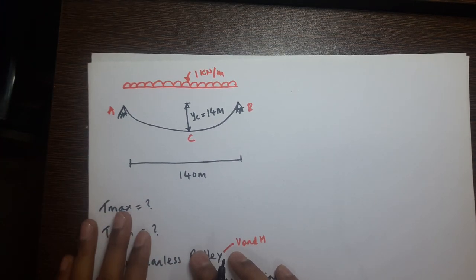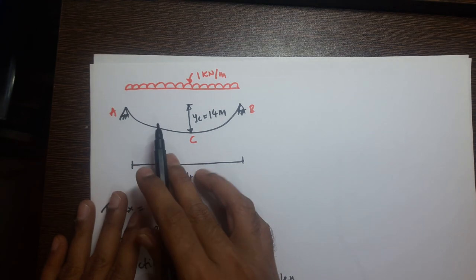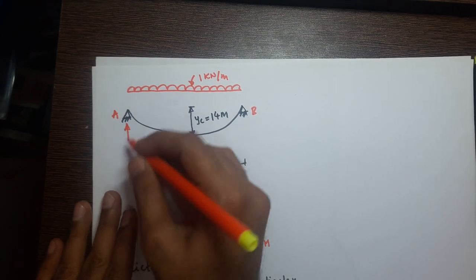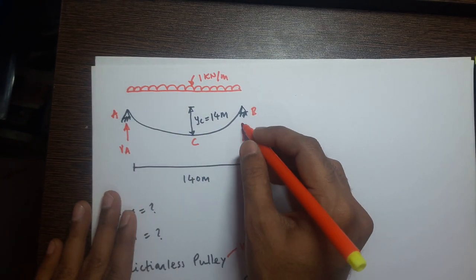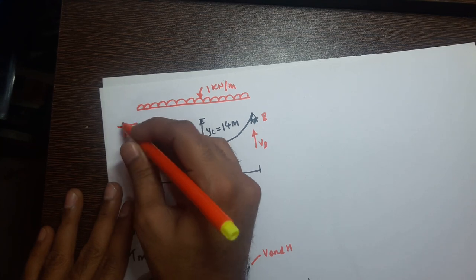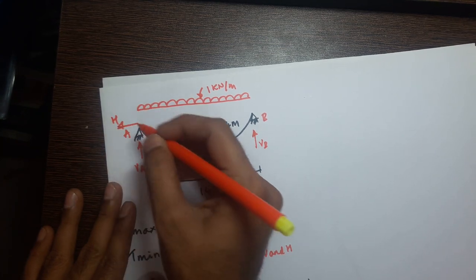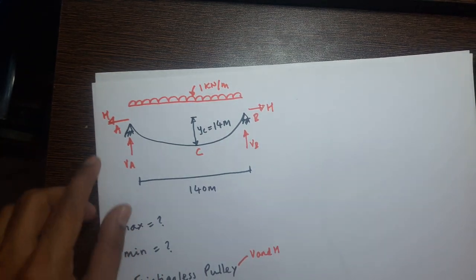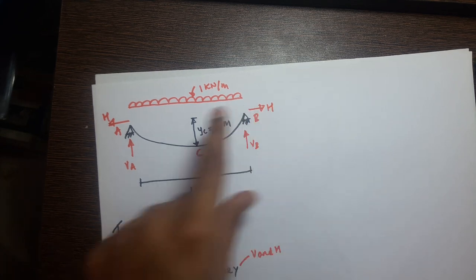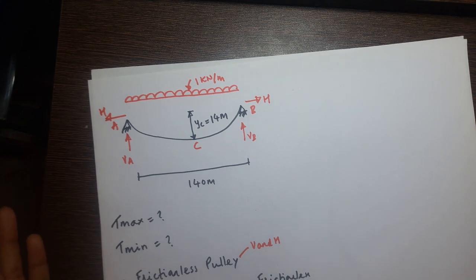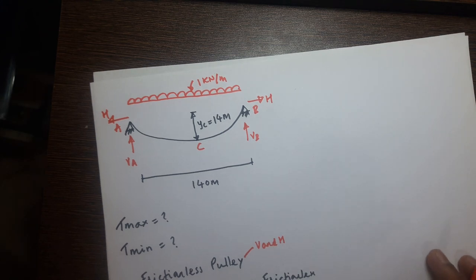Before calculating tension, we need the support reactions. Define the support reactions: V_A and V_B are vertical reactions, and H is the horizontal reaction pointing away from the joint at each support. This H is equal at both supports, regardless of whether the cable is symmetrical or unsymmetrical.